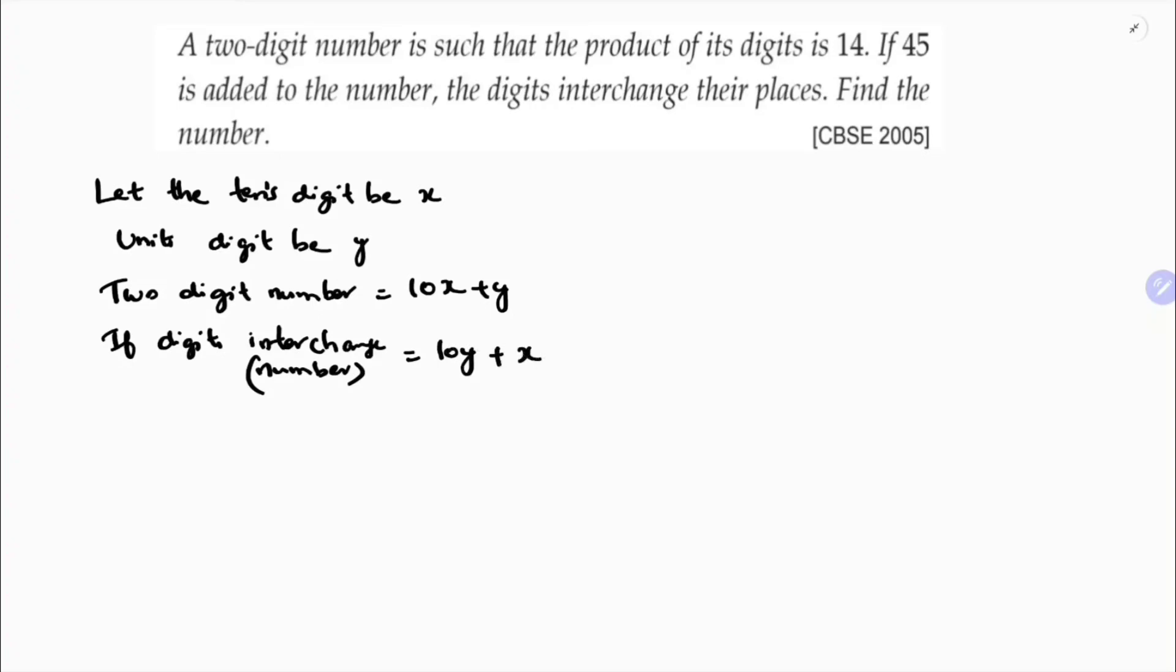First, write these four steps if the problem is based on two-digit number. Then write the given conditions. The product of the digits is 14, so x into y is 14. This is equation one.